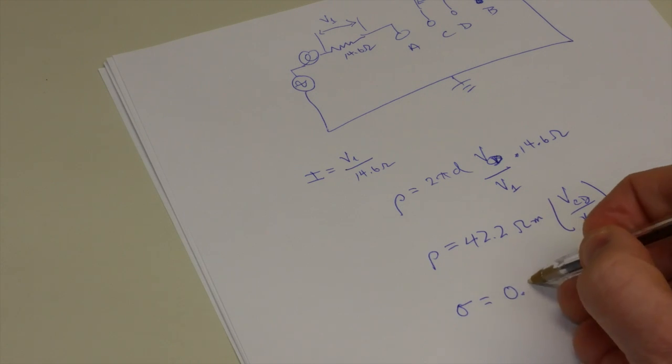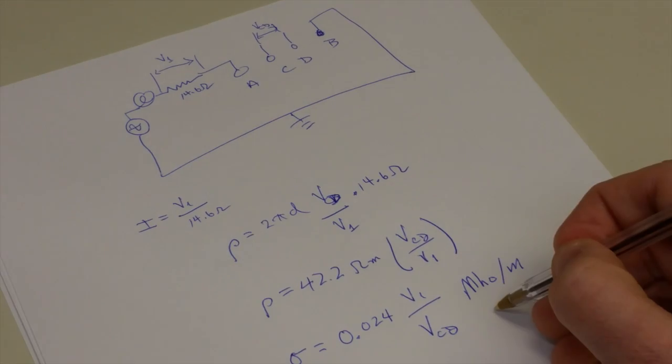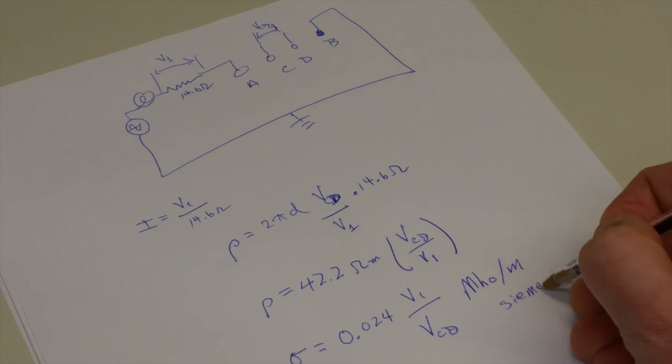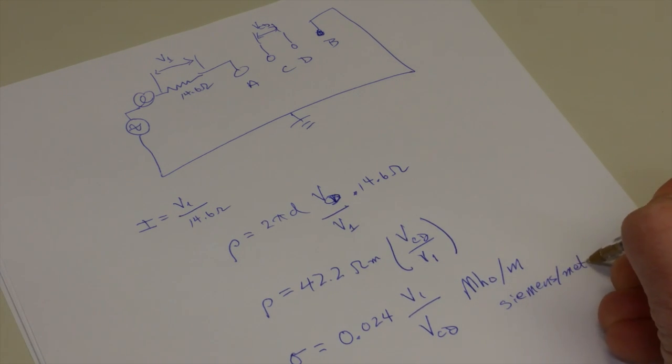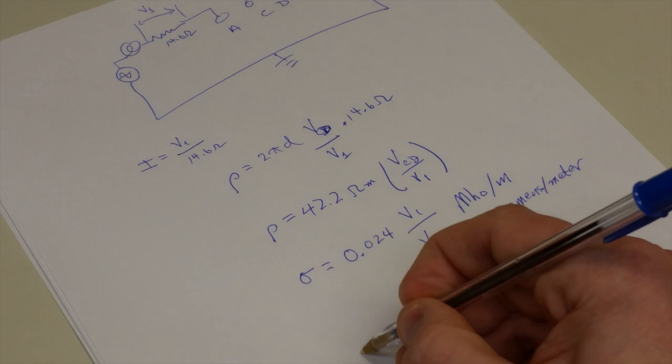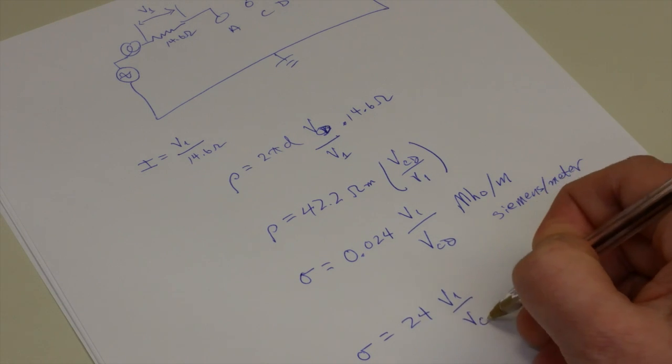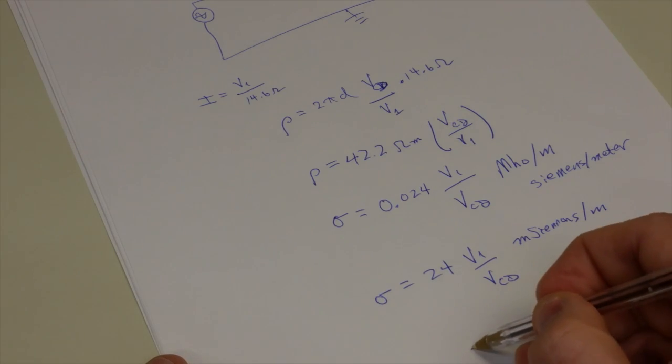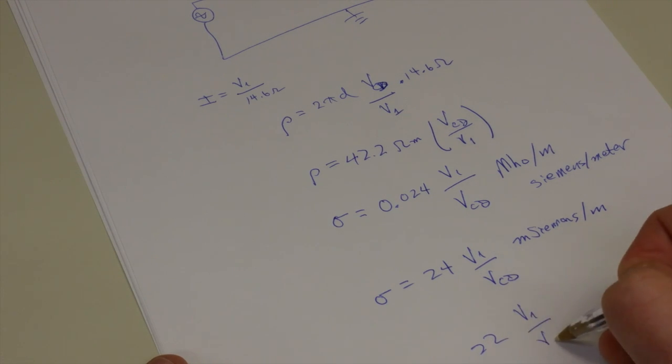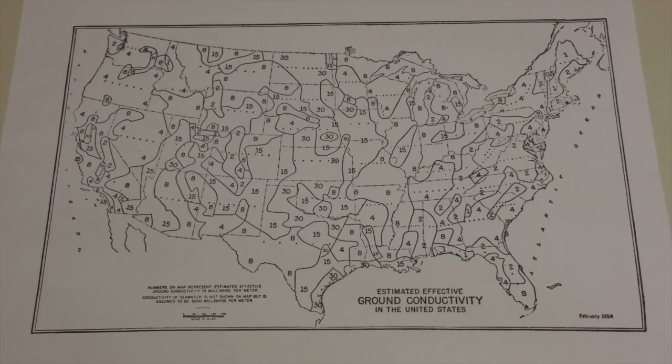If we invert this to get an expression for the conductivity sigma, that means that sigma is equal to 0.024 times V1 over VCD. And this now is going to be Mohs per meter, or the modern unit is Siemens per meter. Or if we convert that to millisiemens per meter, we have sigma is equal to 24 V1 over VCD. And remember what they got was 22 V1 over VCD. We each handled our significant figures a bit differently.